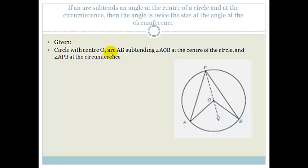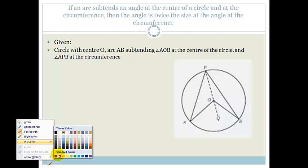Let's do the first one. Given this circle with center O, arc AB subtends angle AOB at the center of the circle, and also subtends angle APB at the circumference. We want to prove that angle APB is half of angle AOB, or that AOB is twice APB. I'm going to teach you the tricks.